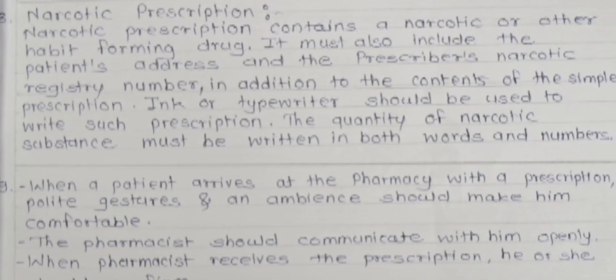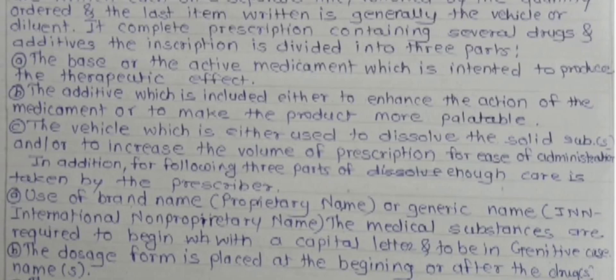Eighth question: what is meant by a narcotic prescription? For a narcotic prescription, the address of the patient and the address of the doctor must be present with full name of the patient. Ink or a typewriter — meaning pen or ball pen — must be used to write such a prescription, or it should be a printed prescription. Very importantly, the quantity must be written in both words and numbers.